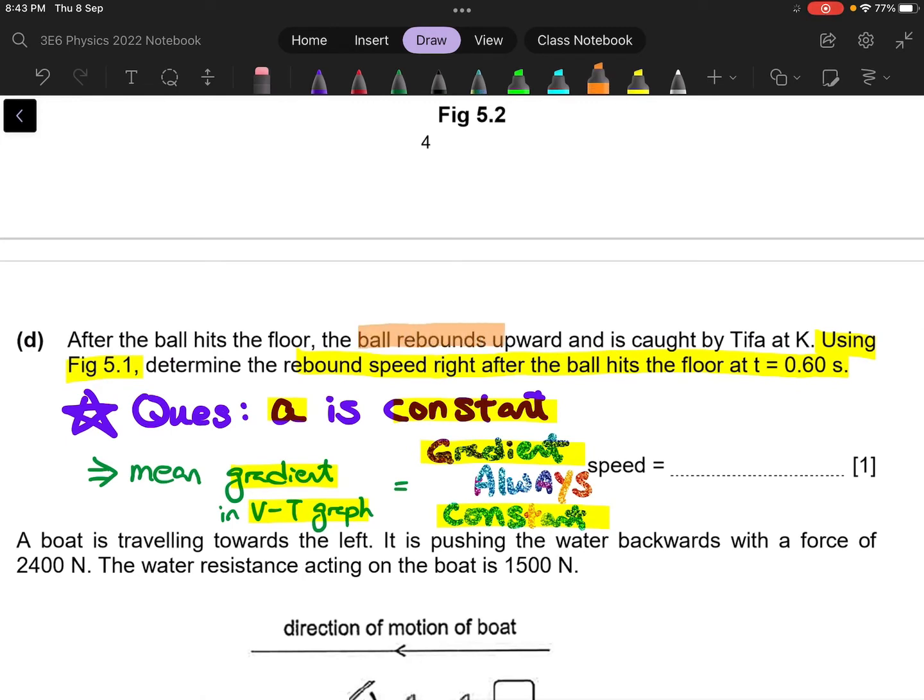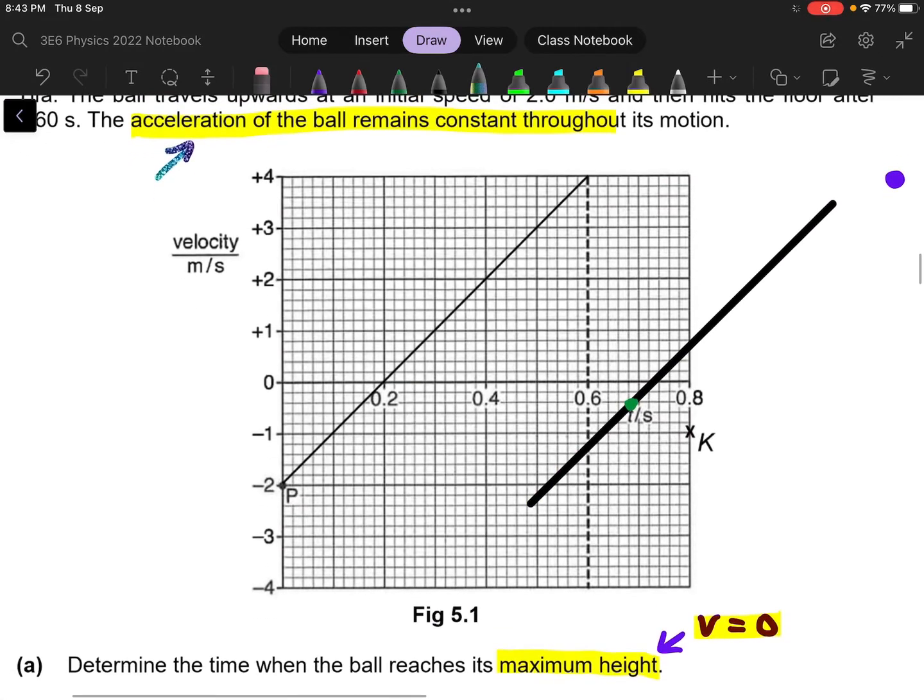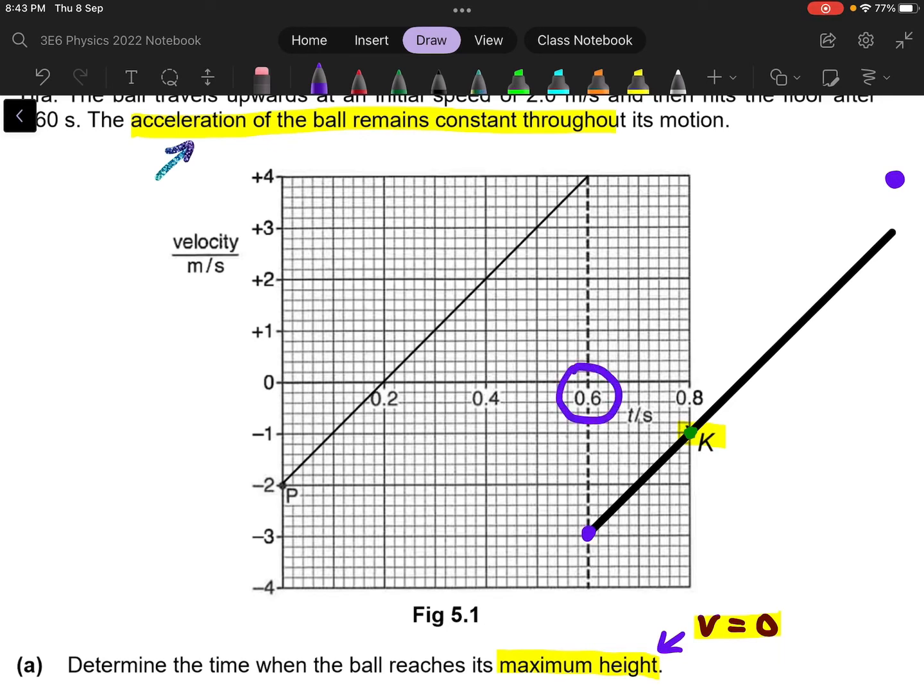Now if you read the last part of the question, there is another hint given to you and that is the ball actually rebound upward and is caught by Tifa at K. So it means that the motion of the ball must cut K, because you are being caught at K. So now it means that now I can locate K. So K is actually here. So it means that when I draw this parallel line, I need to shift it such that this parallel line actually cuts K. And when I do that, you can see that my line will look like this. And what it tells you is that it means it is bouncing off the ground at time equals to 0.6 like that. So you can actually find what is the velocity right here. And it tells you that V is minus 3.